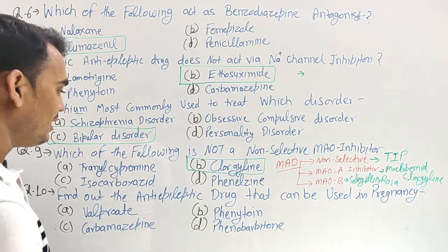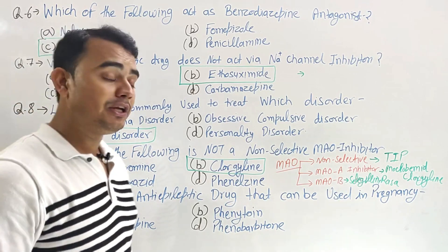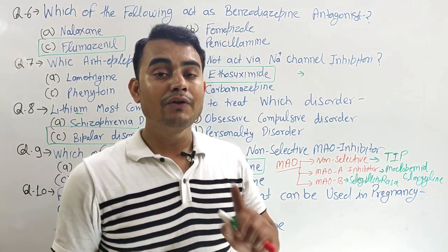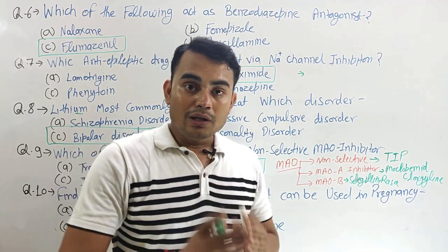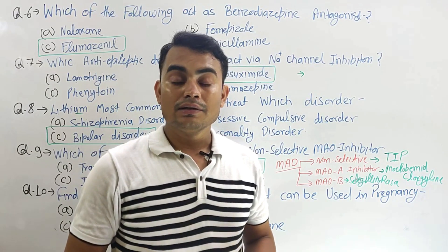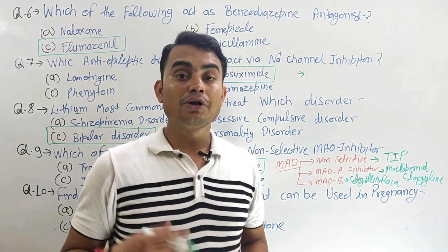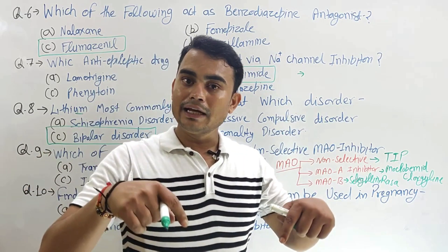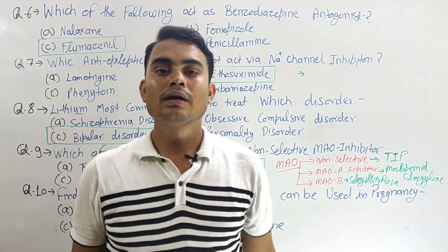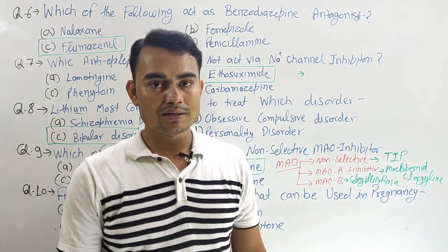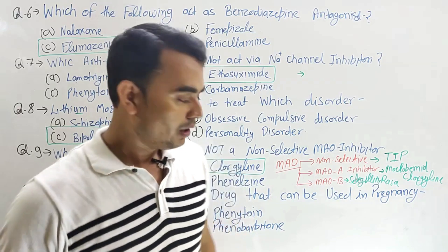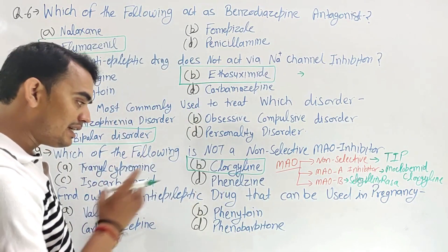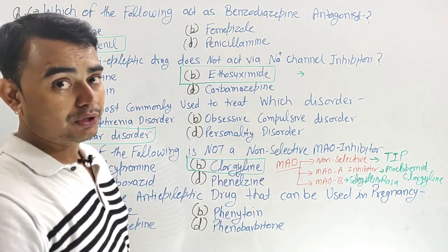Next: find the antiepileptic drug that can be used in pregnancy. I have previously made a video on all teratogenic drugs which should not be used during pregnancy — I will give the link in the description, you should watch that video. So here we need to find which antiepileptic drug can be used during pregnancy. Valproate — it cannot be used because it leads to cardiac and limb malformations in the fetus.